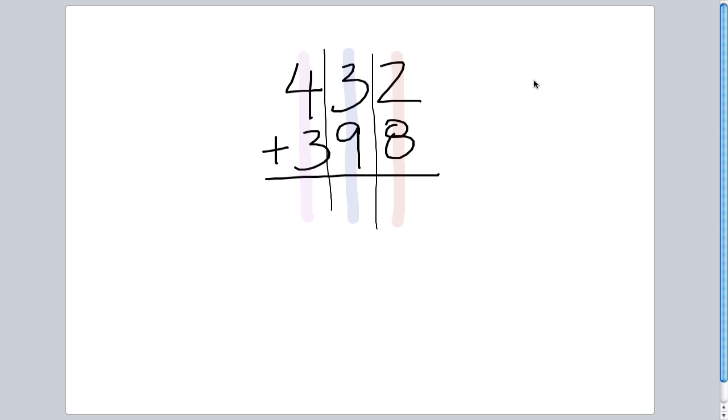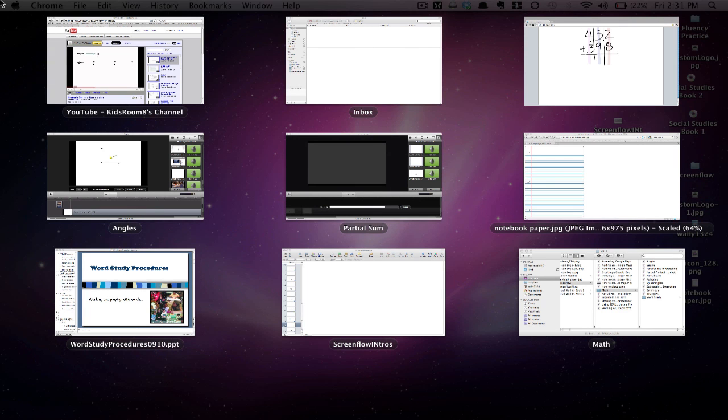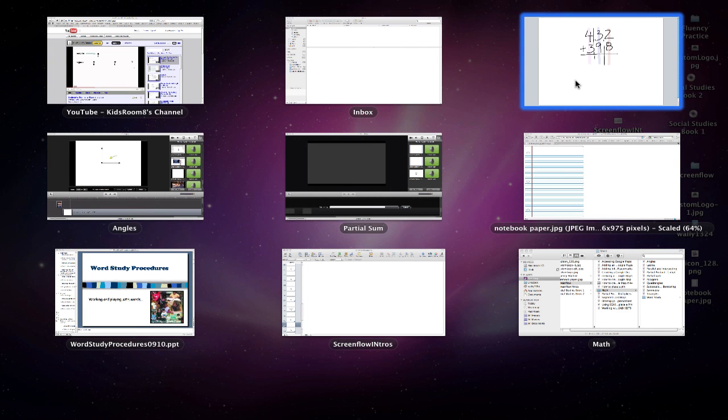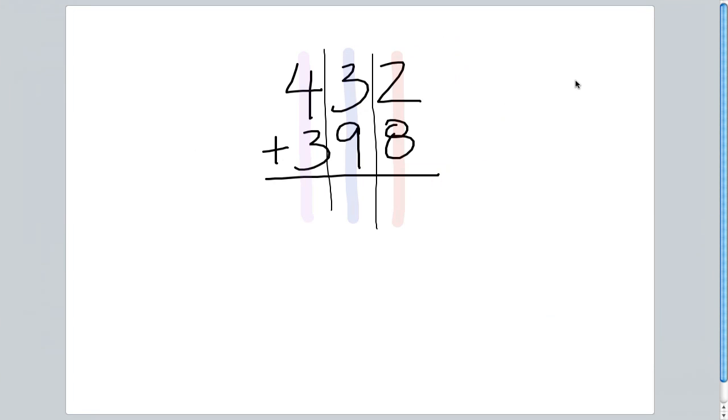Let's start by adding the ones column. I'm going to add 8 plus 2 which gives me 10. Now I can't fit a two-digit number into the ones column, so I'm going to write the 0 and carry that 10 to its appropriate column, the tens column.